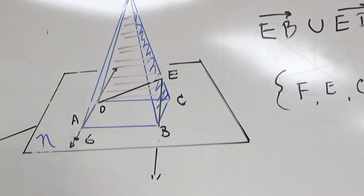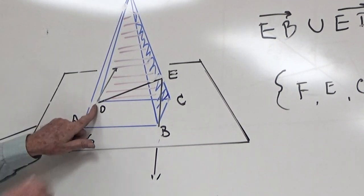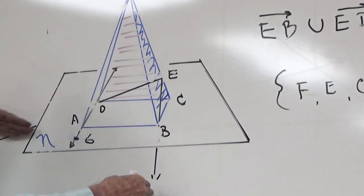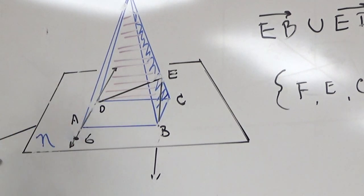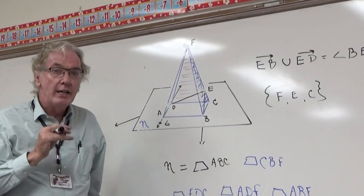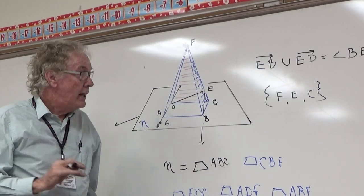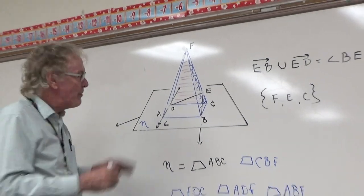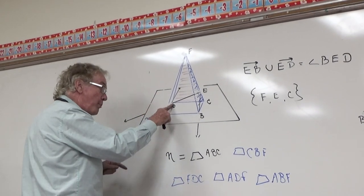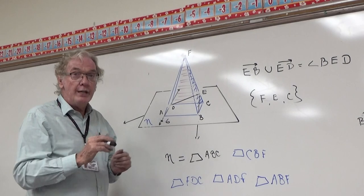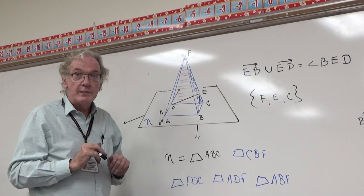Are points D, E, and B collinear? No — D, E, and B were on those two non-collinear rays that made an angle, so D, E, and B are non-collinear; they don't lie on the same line. But are they coplanar? I would tell you that any three non-collinear points are always coplanar. I don't see the plane that holds them, but they would all lie in plane DBE or plane DEB. Any three non-collinear points are always coplanar.